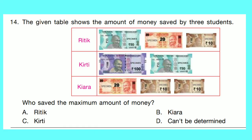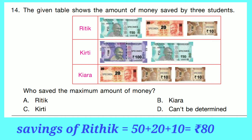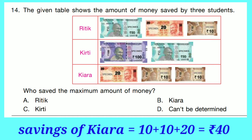Question number 14: The given table shows the amount of money saved by three students — Hrithik, Krithi, and Kaira. Who saved the maximum amount? Savings of Hrithik: 50 plus 20 plus 10 equals 80. Savings of Krithi: 100 plus 50 equals 150. Savings of Kaira: 20 plus 10 plus 10 plus 10 equals 40. 150 is the highest. So correct option is C: Krithi.